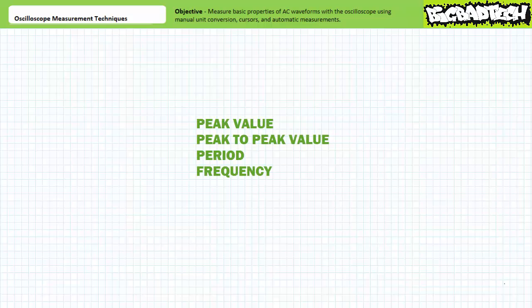Our objective is to learn how to use the oscilloscope to measure basic properties of AC waveforms, including peak value, peak to peak value, period, and frequency. We'll examine traditional manual methods as well as time-saving automated methods offered by some modern oscilloscopes.